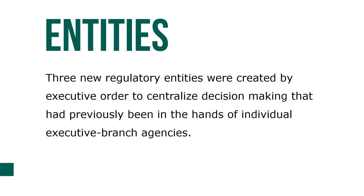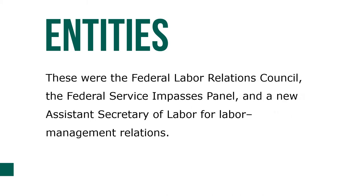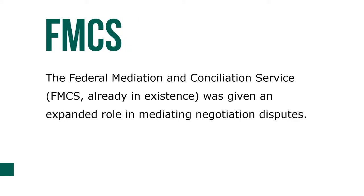Three new regulatory entities were created by executive order to centralize decision making that had previously been in the hands of individual executive branch agencies. Growth in union membership and representation has not only been important in the development of the national government, as evidenced by these entities that were created. These were the Federal Labor Relations Council, the Federal Service Impasse Panel, and the new Assistant Secretary of Labor for Labor-Management Relations. The Federal Mediation and Conciliation Service, FMCS, already in existence, was given an expanded role in mediating negotiation disputes.